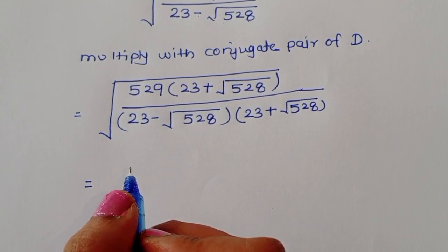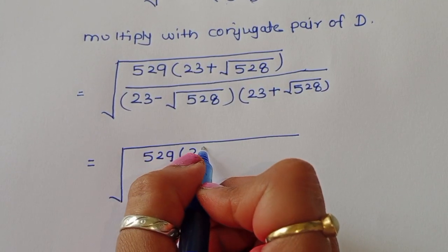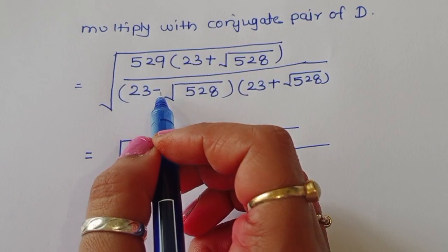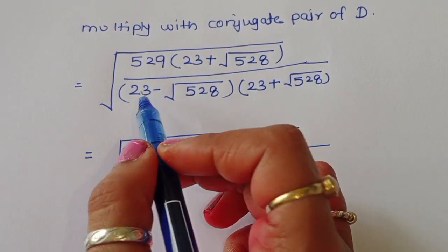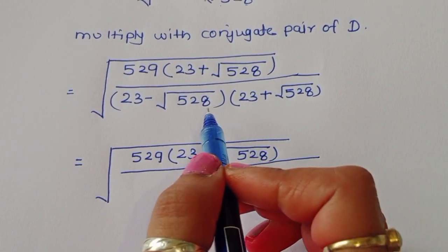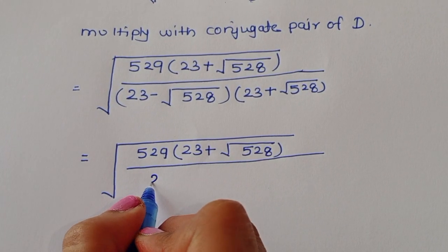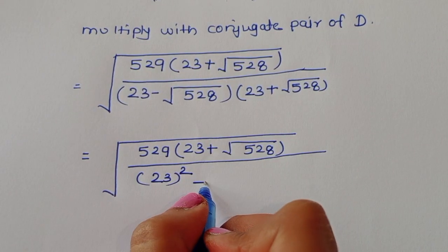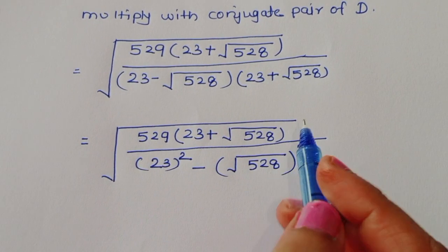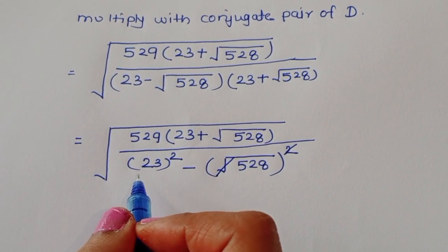This becomes √529 times (23 plus √528) divided by (23 minus √528)(23 plus √528). Now (23 minus √528)(23 plus √528) is of the form (a minus b)(a plus b), which equals a² minus b², where a is 23 and b is √528. So the denominator becomes 23² minus (√528)².